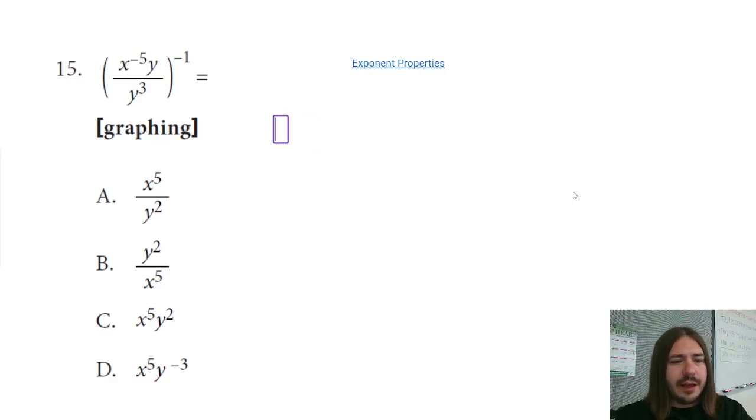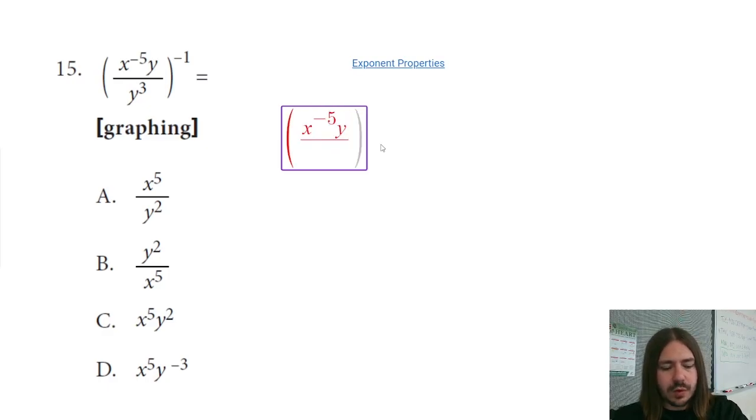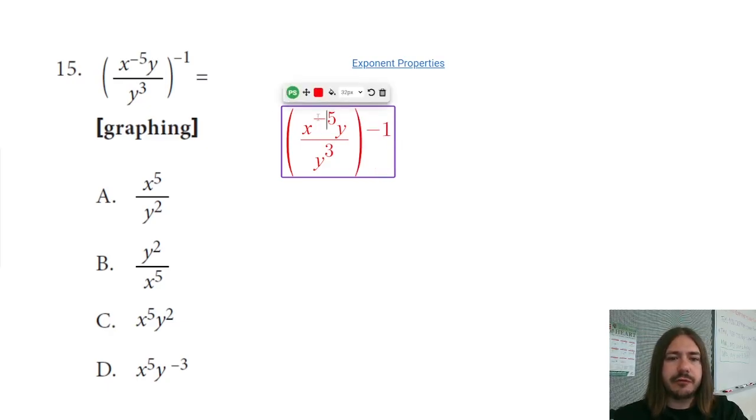We've got x to the negative fifth times y all over y cubed. Now I'm going to simplify this probably a little differently than you may have seen before, but hopefully it'll all make sense.